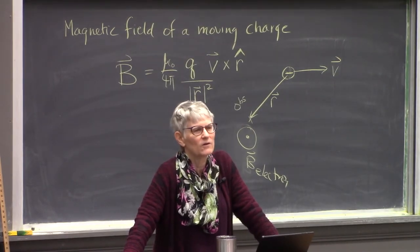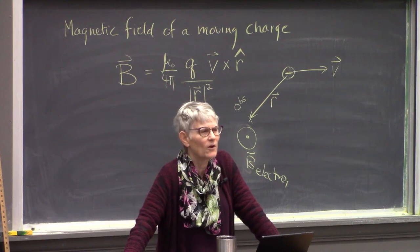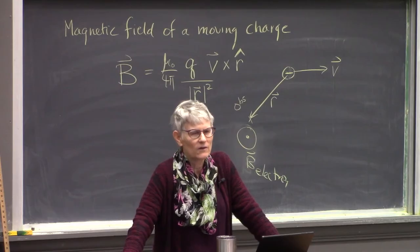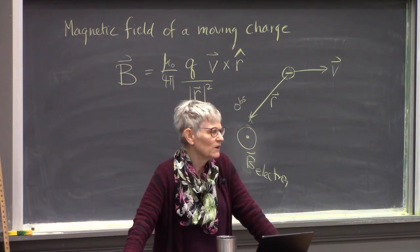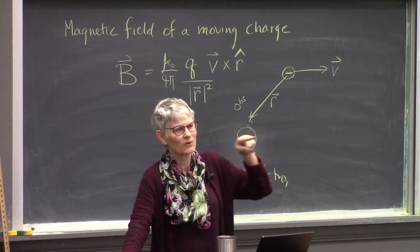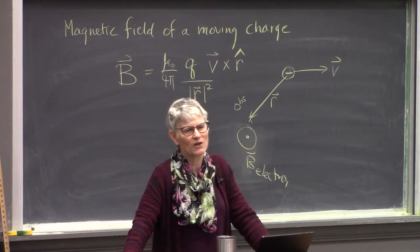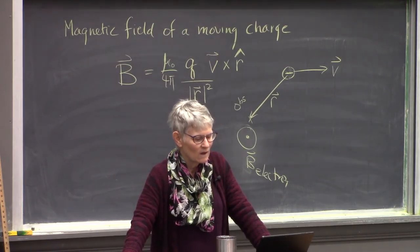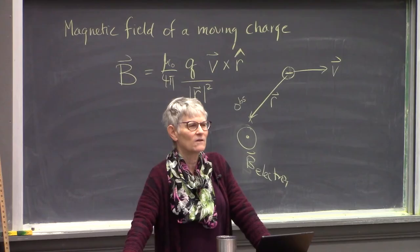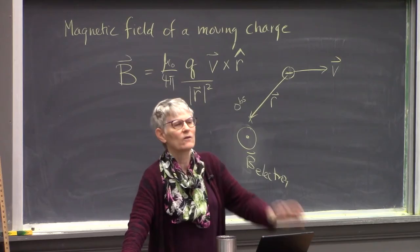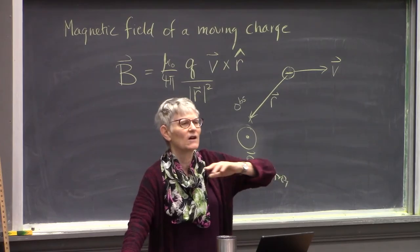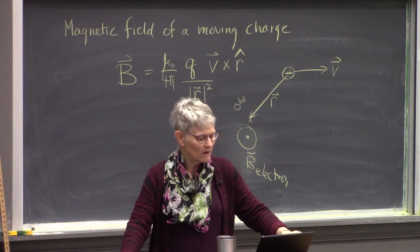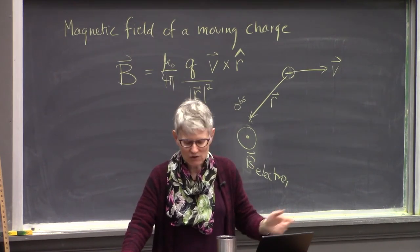So we can calculate the magnetic field of one moving particle. But in lab we don't have equipment to make single moving particles easily. What we need is a quantitative relationship between the current in a wire and the number of moving charges and how fast they're moving, so we can calculate the magnetic field made by charges moving in a wire.